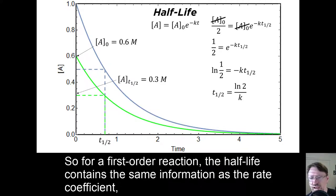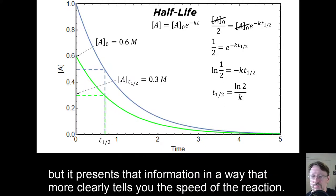So for a first-order reaction, the half-life contains the same information as the rate coefficient, but it presents that information in a way that more clearly tells you the speed of the reaction.